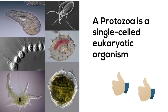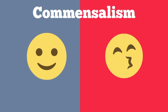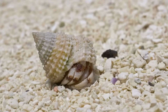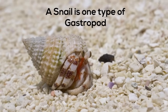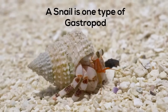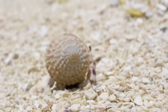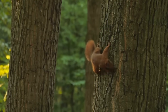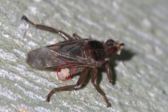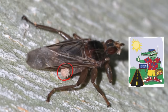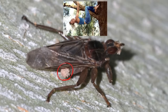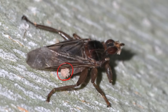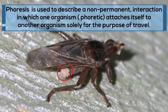Next is commensalism — one benefits and the other is neither helped nor harmed. Hermit crabs live in the shells of once-abandoned snails. This helps the hermit crab by giving them some protection, but the snails don't really care. Squirrels live and stay in trees for protection, yet the tree is neither helped nor harmed. Tiny mites hitch a ride on flies — equipped with some method to grip onto the insect, they get transported around. This phoretic mite is just a hitchhiker and does not feed during this time. The mites receive transportation, but the fly is neither helped nor harmed.